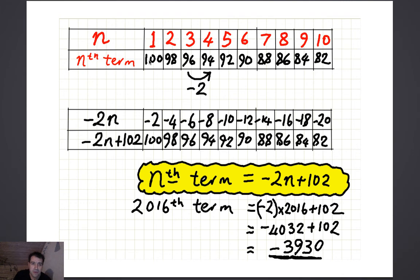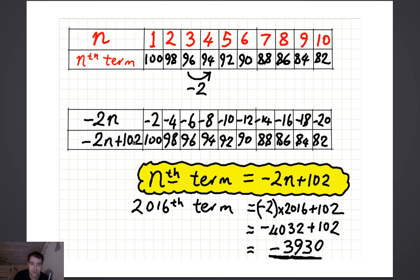Finally, on the next sequence, the numbers are actually going down by 2 every time. That tells you there must be a minus 2n in the rule. But if we just calculate minus 2n, we get minus 2, minus 4, minus 6, and so on — the wrong sequence. We need to add 102 to those numbers to get the ones we want: 100, 98, 96, 94. So the nth term is minus 2n plus 102, and the 2,016th term comes out to be minus 3,930.